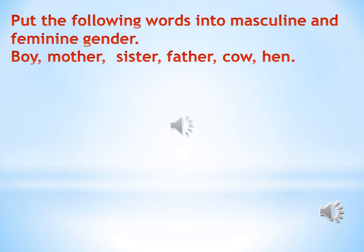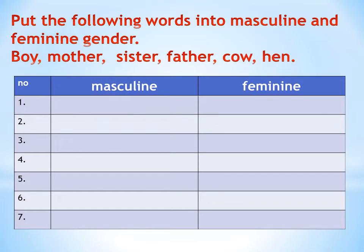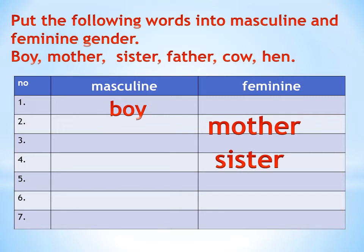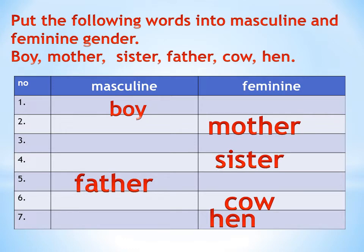Put the following words into masculine and feminine gender: boy, mother, sister, father, cow and hen. Masculine and Feminine Gender. Boy — Masculine Gender. Mother — Feminine Gender. Sister — Feminine Gender. Father — Masculine Gender. Cow — Feminine Gender. Hen — Feminine Gender.